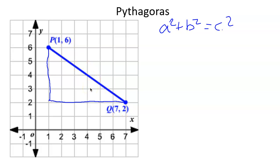So if you want to write it out as a proper formula, it would be (x₂ - x₁)² + (y₂ - y₁)² = c². And of course, we work that out, and then we square root it.